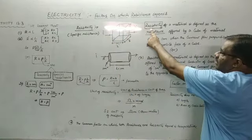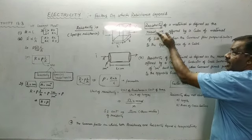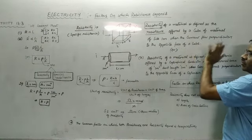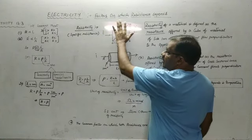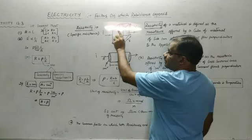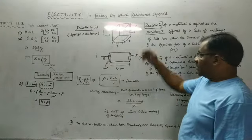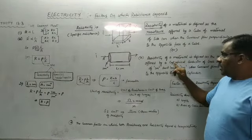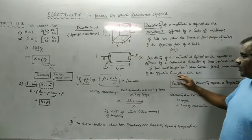Resistivity is nothing but the resistance offered by a cube of material of length 1 meter, breadth 1 meter, and height 1 meter, when current flows perpendicularly to the opposite face. Alternatively, resistivity can be defined as the resistance offered by a cylindrical conductor of cross-sectional area 1 meter square and length 1 meter, when current flows perpendicularly to the opposite face of the cylinder.